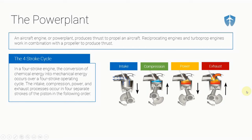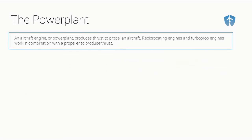As the piston comes back up again, the exhaust valve opens and pushes out all of the exhaust out through your exhaust pipe. Then the piston comes back down and the intake valve opens to suck in fuel and air, compress it, explode it, and blow it out. That's how a four-stroke engine works.